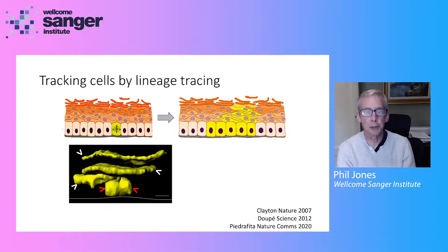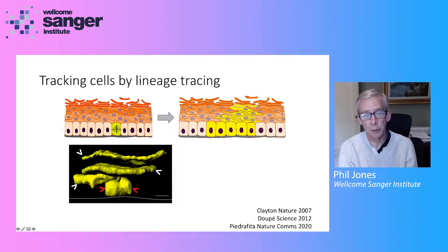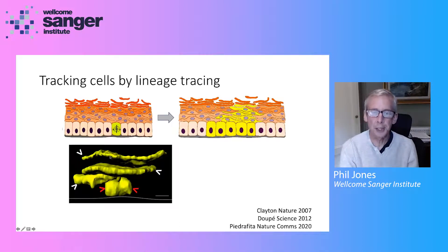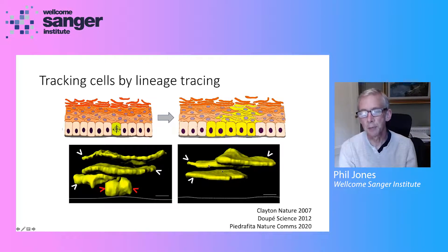An example of real data is shown here. We use 3D imaging at single cell resolution to reconstruct individual clones. This clone comes from a cell labelled about a month ago; it's divided to produce two cells which remain in the dividing layer and three cells which are flattened like dinner plates — these are differentiated and moving towards the surface to be shed. We can also see a three-cell clone where no cells remain in the dividing layer; this clone will inevitably be lost from the tissue in a matter of weeks.